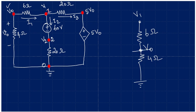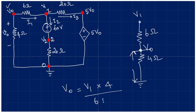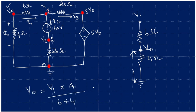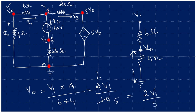Across the 4 ohm resistance, V0 can be calculated as the total potential times the resistance of this branch (4 ohms) divided by the total resistance of this path, which is 6 plus 4 equals 10. So V0 equals 4V1 divided by 10, which simplifies to 2V1 over 5.